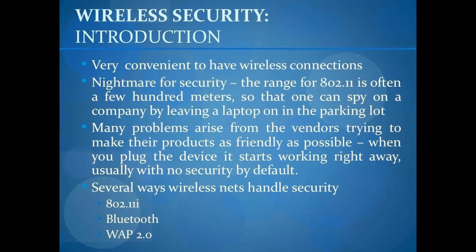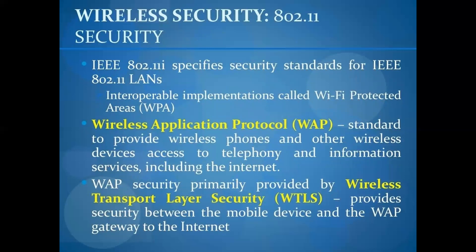Several wireless networks handle security by default. The 802.11i standard specifies the security standard for wireless devices and access points connected to wireless ports, providing device access to telephony and information services including the internet. WAP security is primarily provided by Wireless Transport Layer Security (WTLS), which provides security between mobile devices and the WAP gateway.